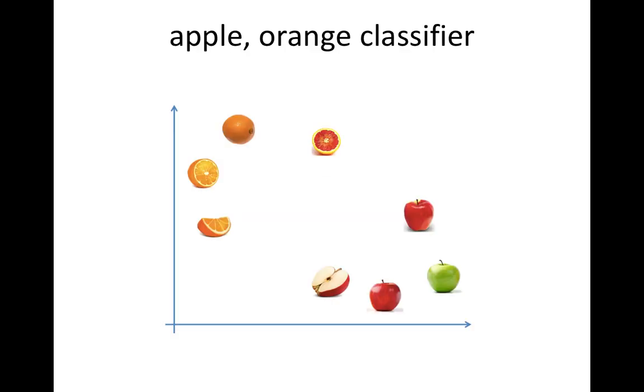SVM is one of the machine learning classifiers. Here is a simple example of an apple and orange classifier. I draw a red line here which we call the decision boundary. You can see the upper side is the orange area and the downside is the apple area.